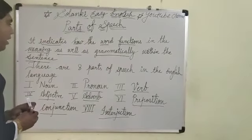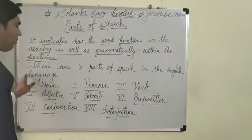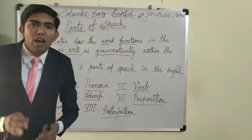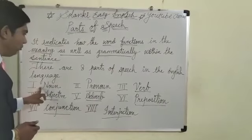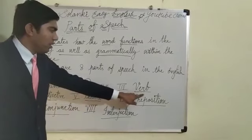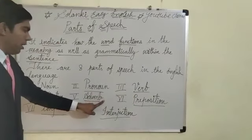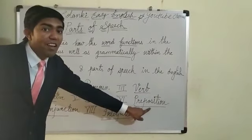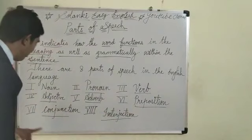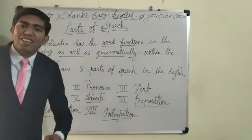Okay. There are 8 kinds of parts of speech in the English language. In English language mein, 8 kinds ke parts of speech hotte hai. Pahla noun. Dusra pronoun. Tisra verb. Fourth one adjective. Fifth one adverb. Sixth preposition. It's not the preposition. It's preposition. Seventh one conjunction. And the last one is interjection.